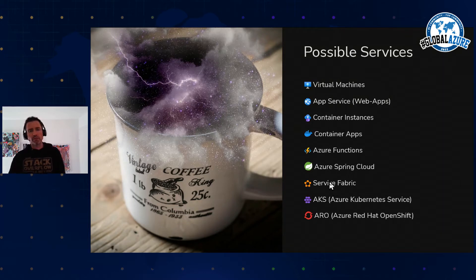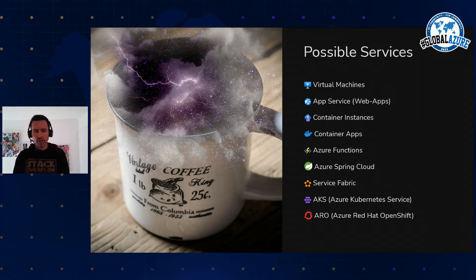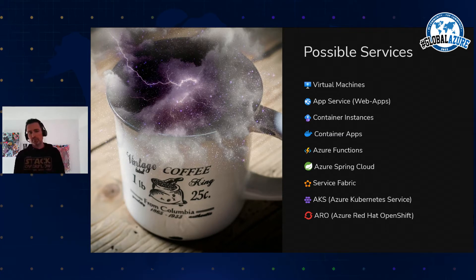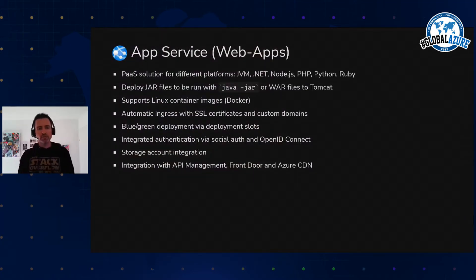Today I'm going to talk especially about App Service, Container Apps, Azure Functions, and Azure Kubernetes Service. I'll mention the other services briefly, but these are the main deployment targets for Java applications nowadays. Only if you have a Spring application, then Azure Spring Cloud is also a viable option. I'll show lots of hands-on demos of how to deploy — I have some slides but those are mostly for you to look up the facts later.